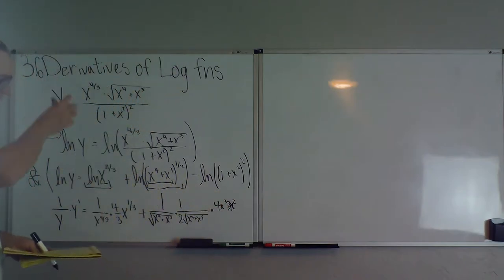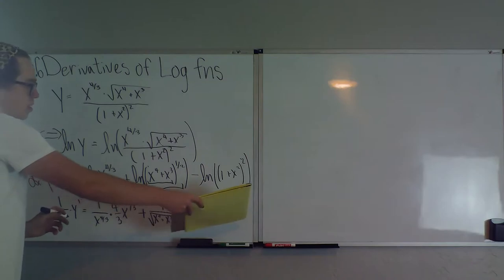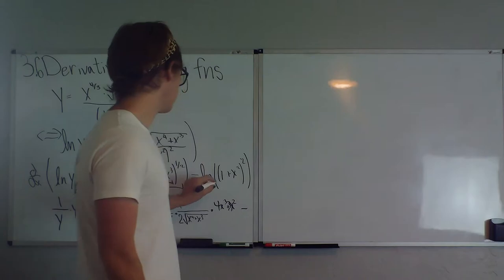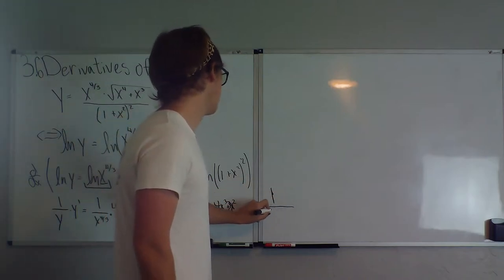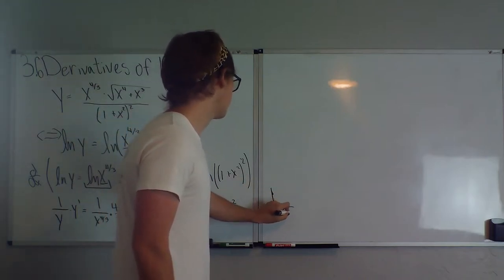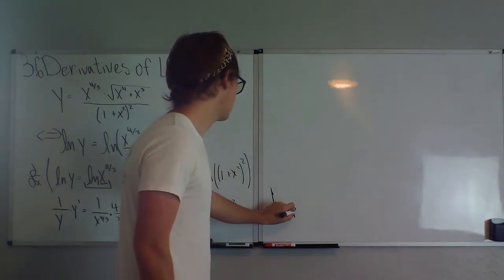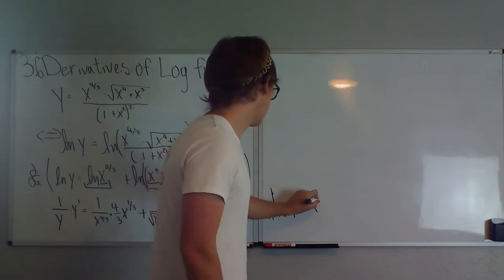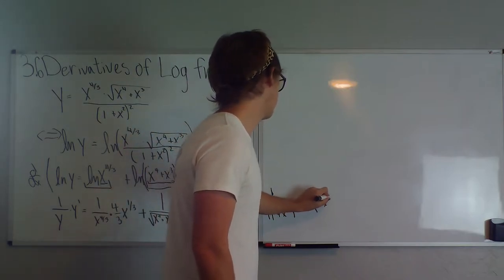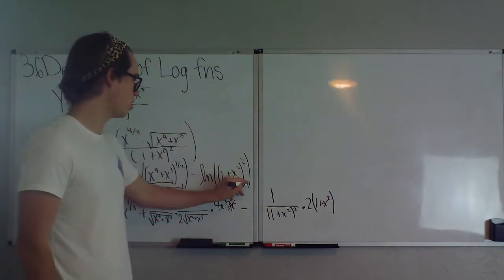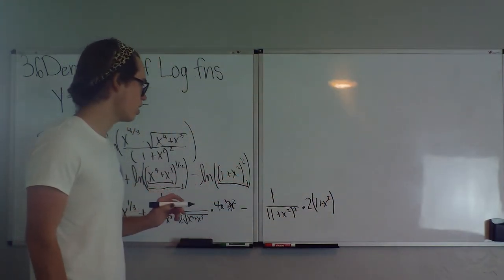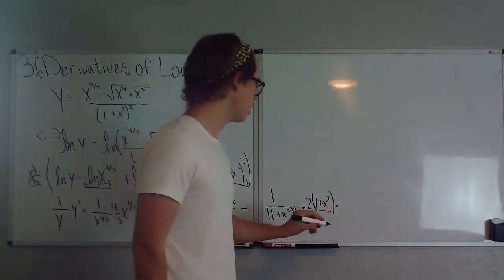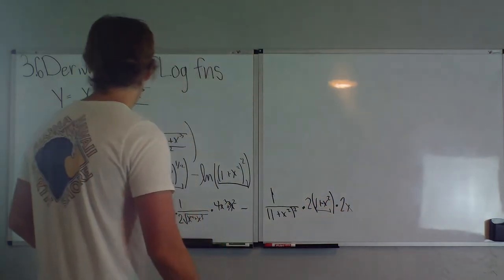Running out of whiteboard space, we continue. Subtracting the last term: the derivative of ln of (1 plus x squared) squared gives 1 over (1 plus x squared) squared times 2 times (1 plus x squared) — that's the power rule on the outer function — then multiplied by the derivative of the inside, which is 2x.